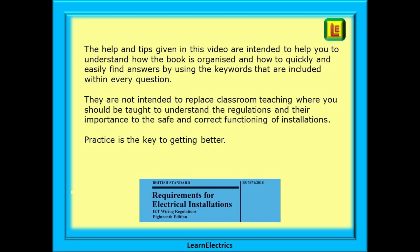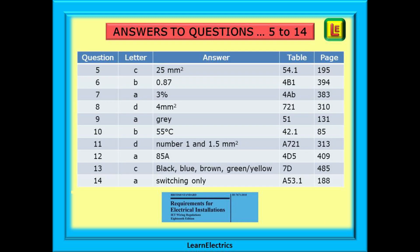Just a reminder that the help and tips given in this video are intended to help you understand how the book is organised and how to quickly and easily find answers by using the keywords included with every question. They are not intended to replace classroom teaching, where you should be taught to understand the regulations and their importance to the safe and correct functioning of installations. Practice is the key to getting better. And here, as promised, are the answers to questions 5 to 14, along with the table number you should have found and the actual page number in the regulations book where the table is located.